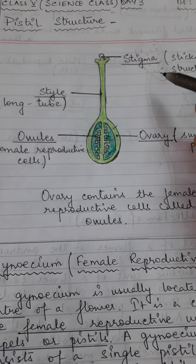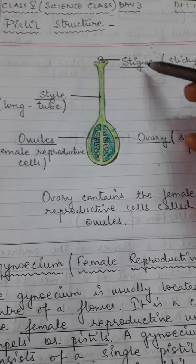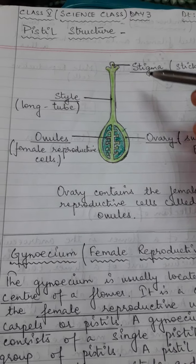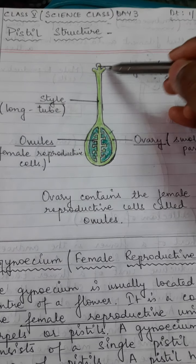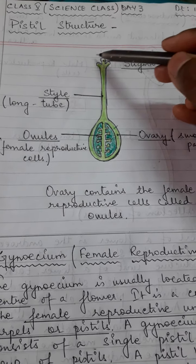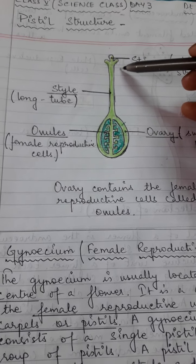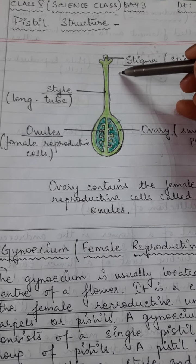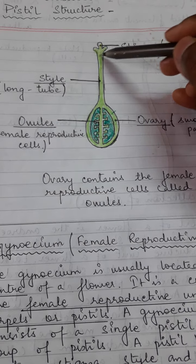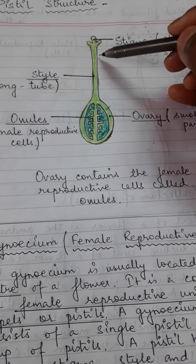Let's start with stigma first. Stigma is the sticky swollen tip of the pistil. It is responsible for receiving the pollen grains. So this is the part where it receives pollen grains.